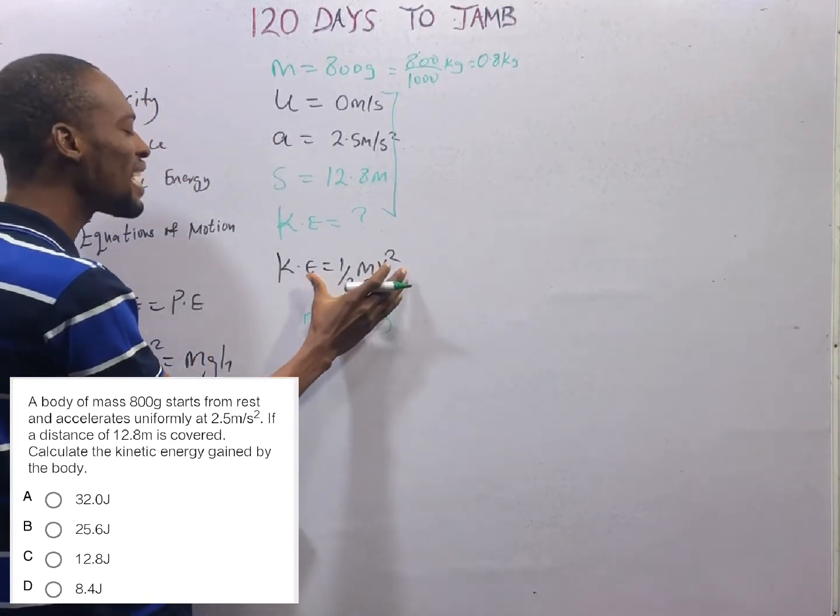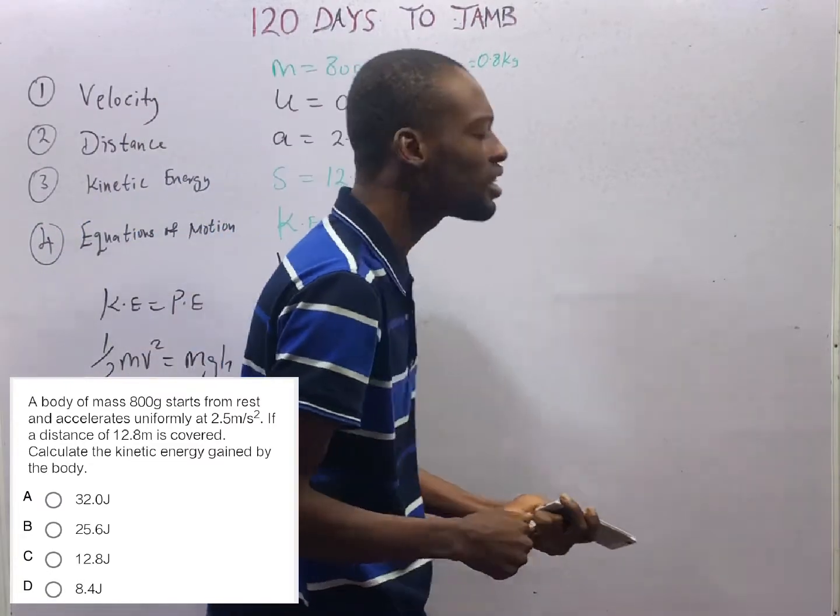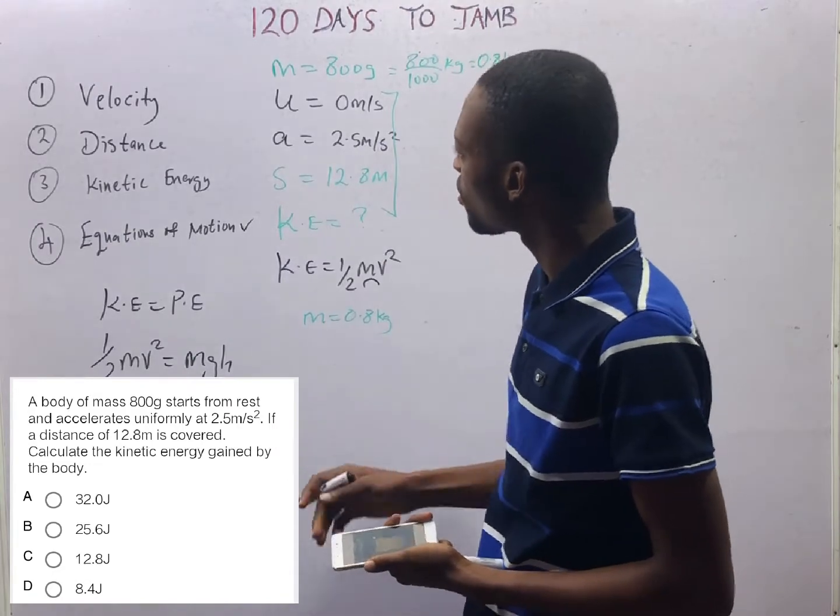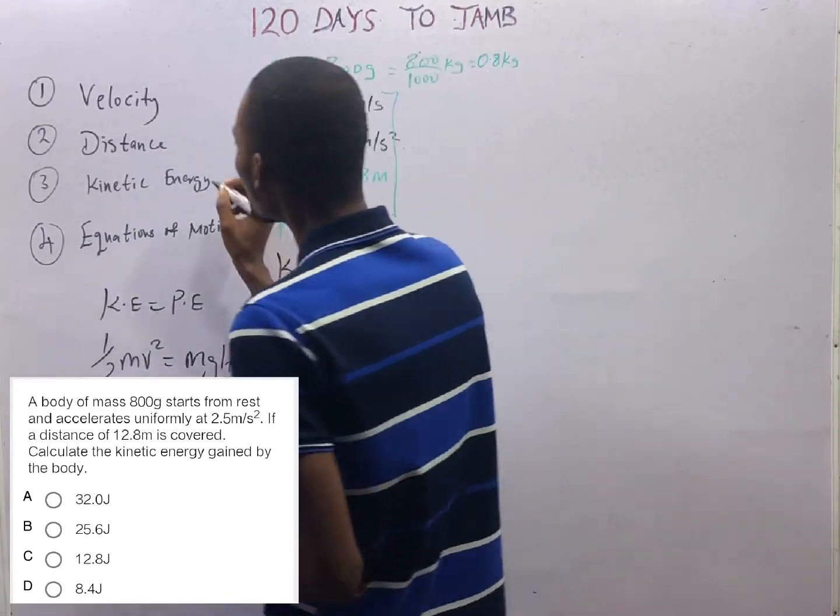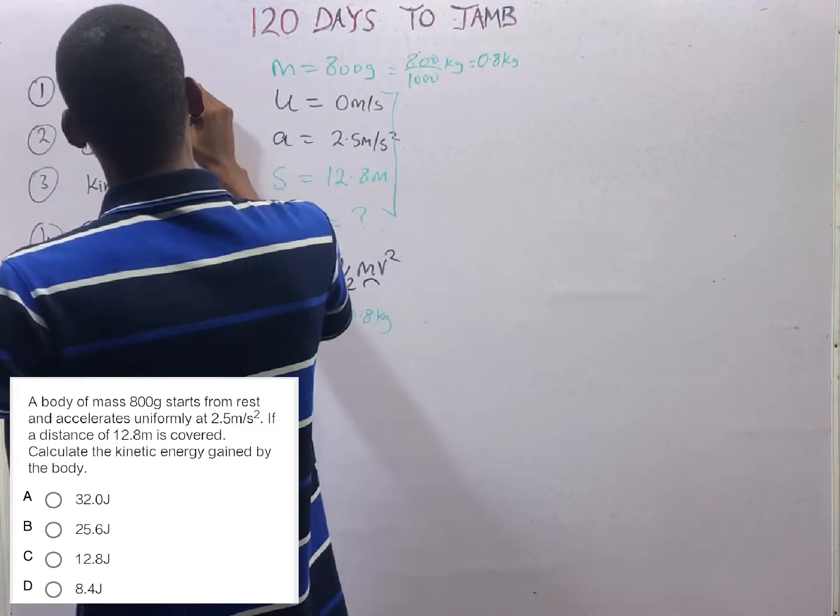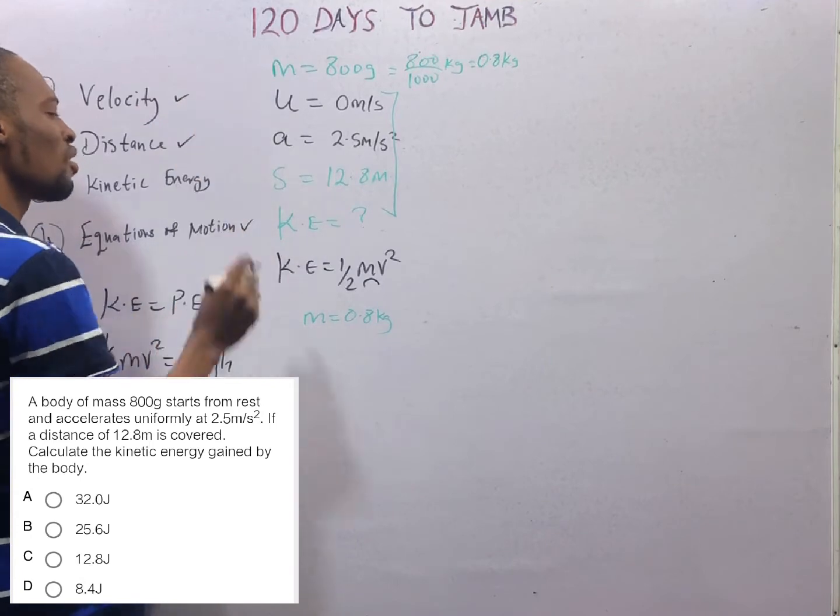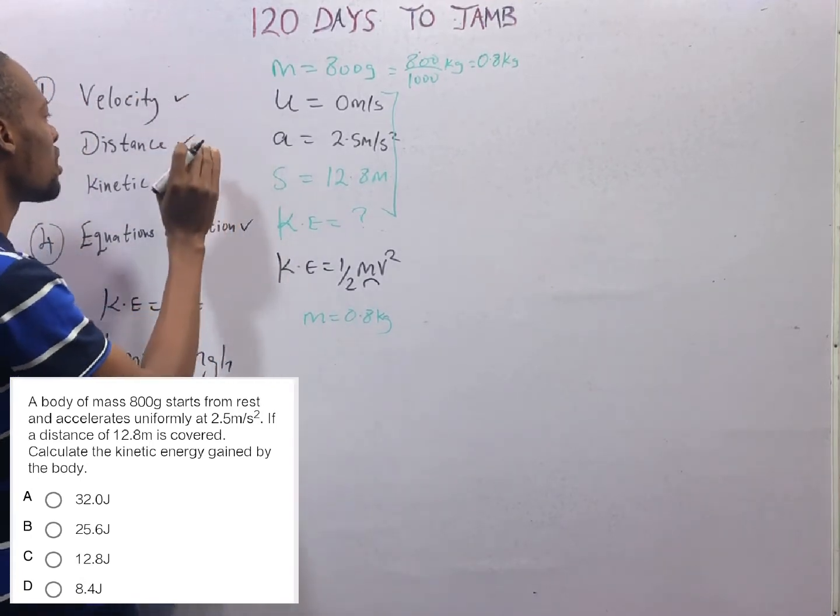How do we get velocity? We get velocity from the equations of motion. Distance is the ground covered by an object. And velocity is displacement over time. From equations of motion, you can find velocity, you can find distance.